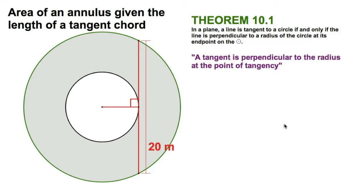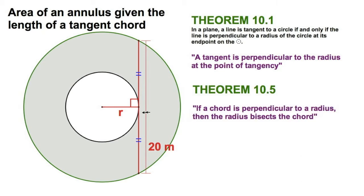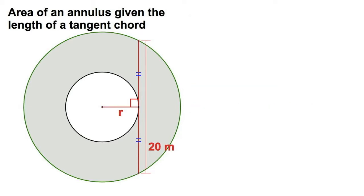So we know a couple of things. First off, the tangent part: tangent is perpendicular to the radius at the point of tangency. I'm going to call this radius r — that's the little r for the inner circle. And since the chord is perpendicular to the radius, that radius bisects the chord. That's really all we need as far as theorems, and the rest just takes care of itself.